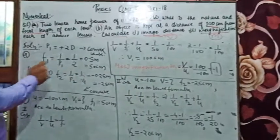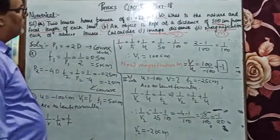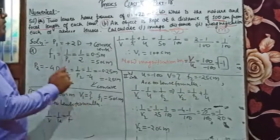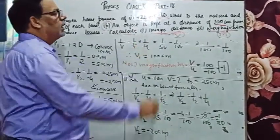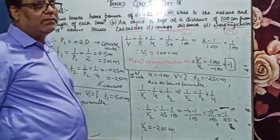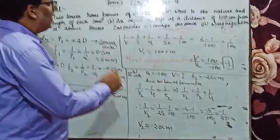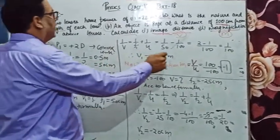Hello students of class time. Today I'm going to explain one very good question. A lens has two different powers: 2 diopter and 4 diopter. Through that you can decide the nature of the lens, and secondly, you can find the magnification of this lens.